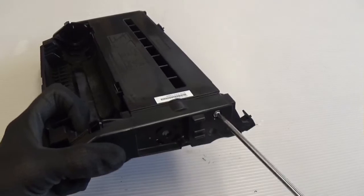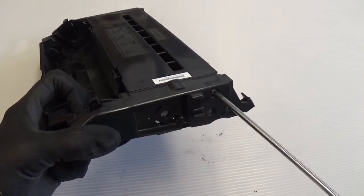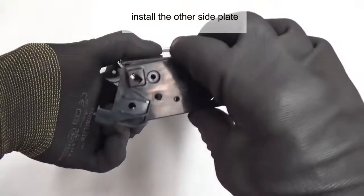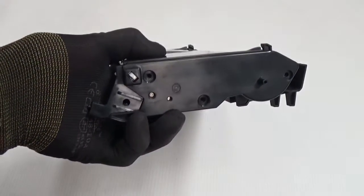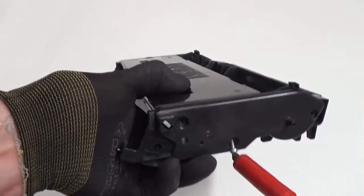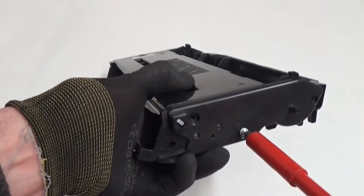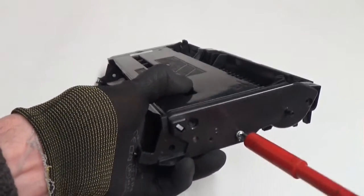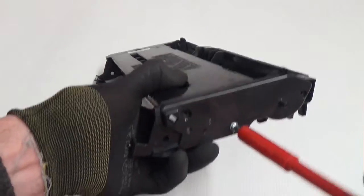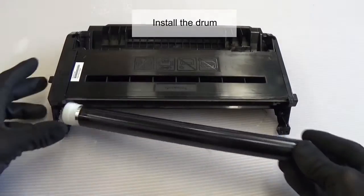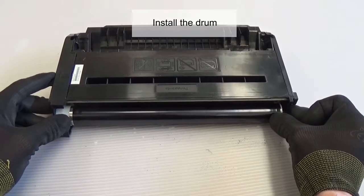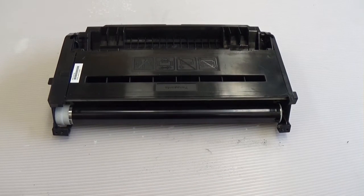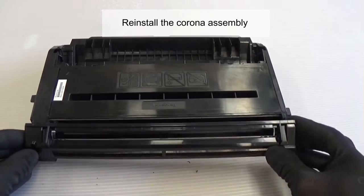Install the other side plate. Install the drum. Reinstall the corona assembly.